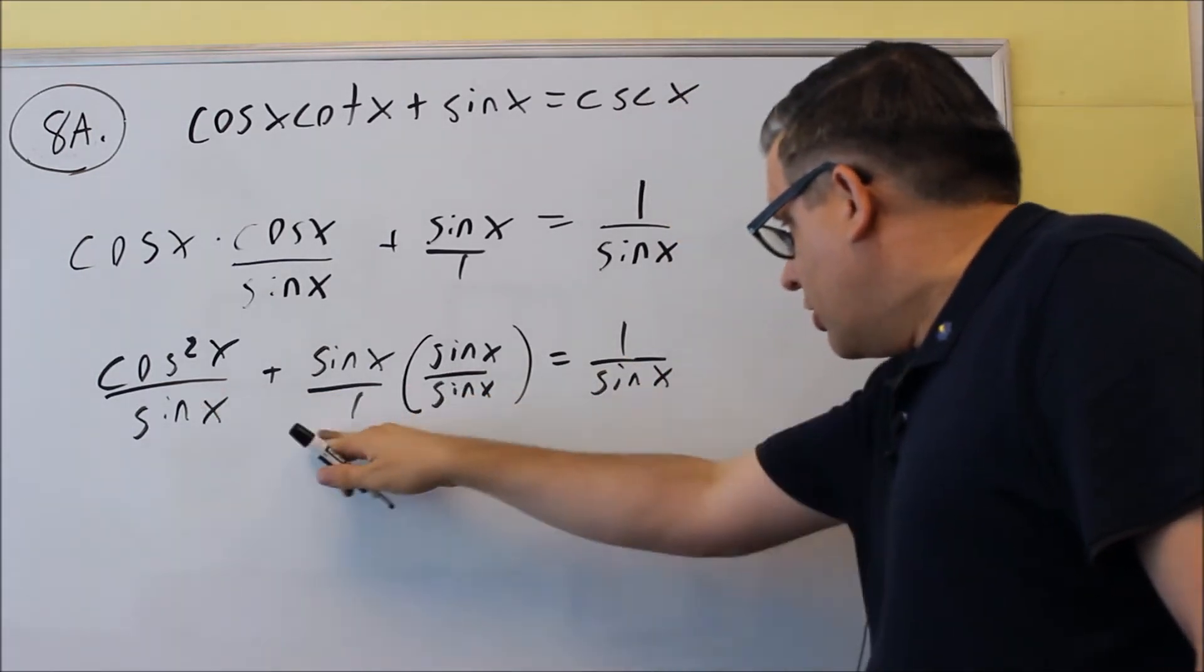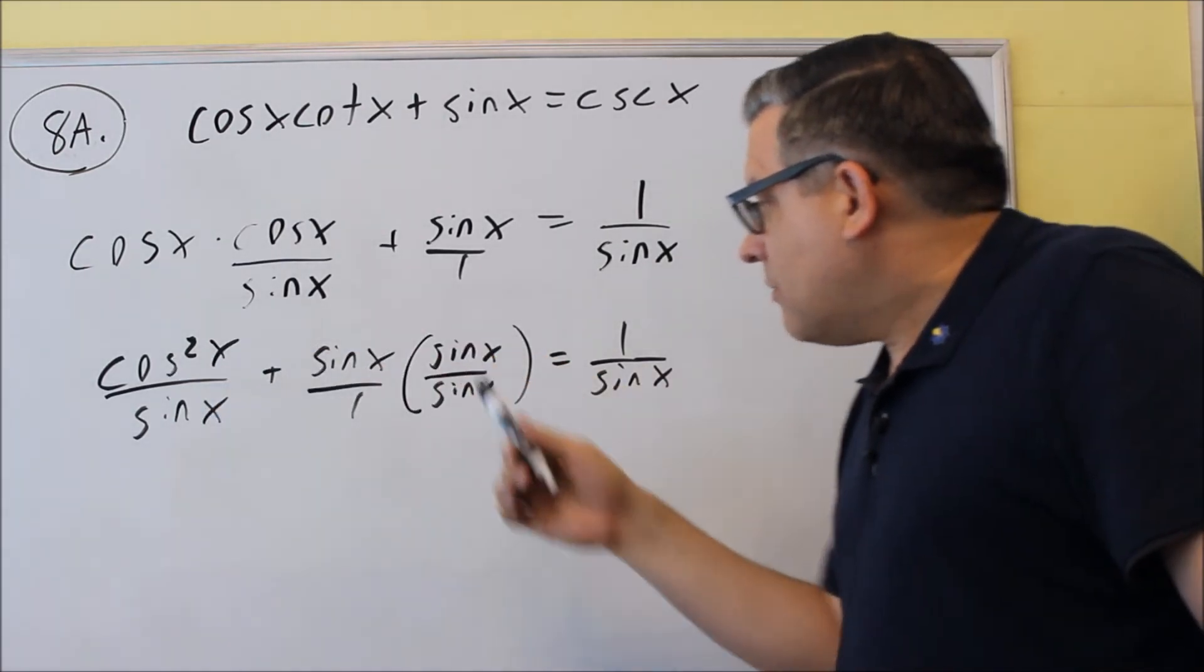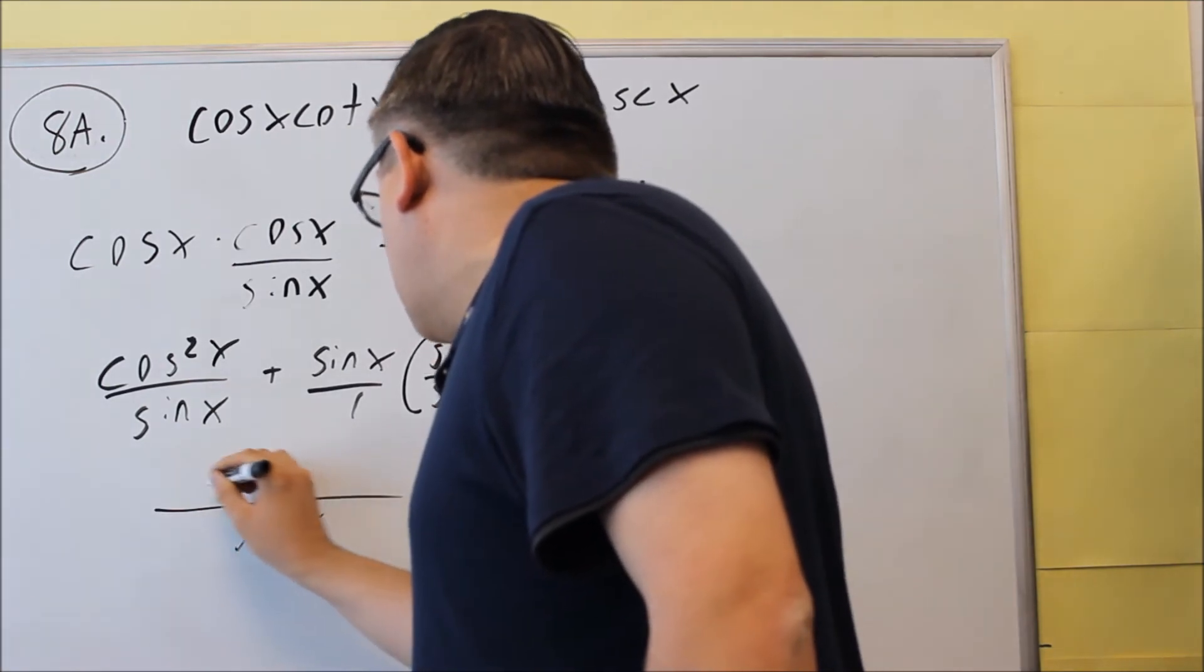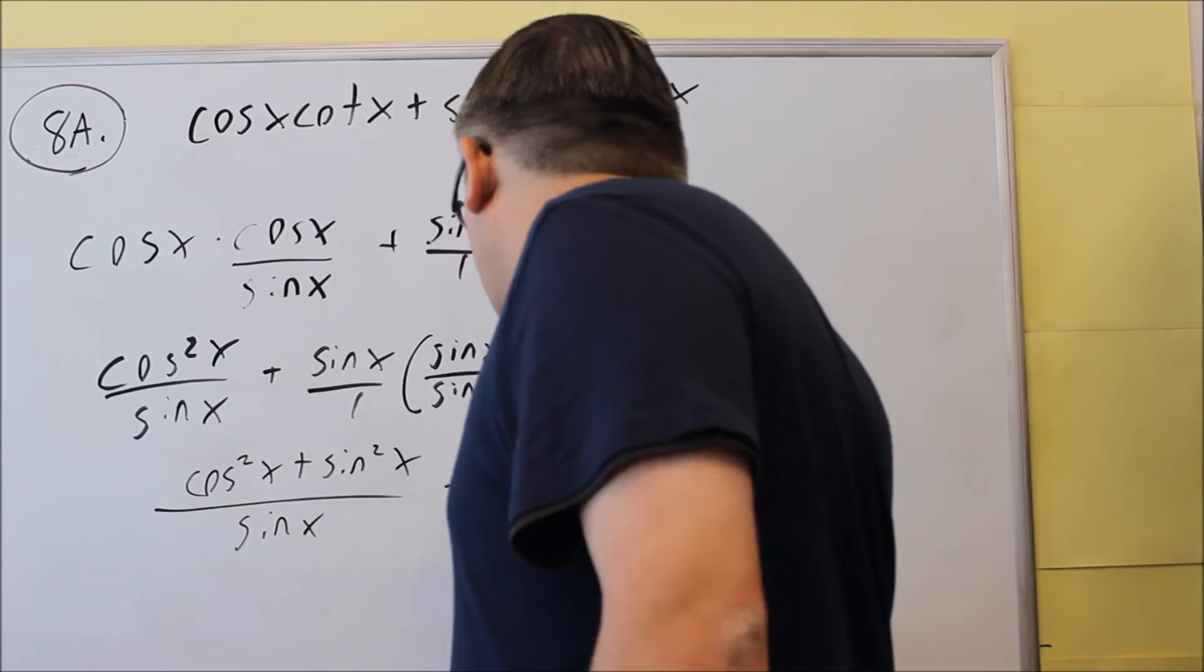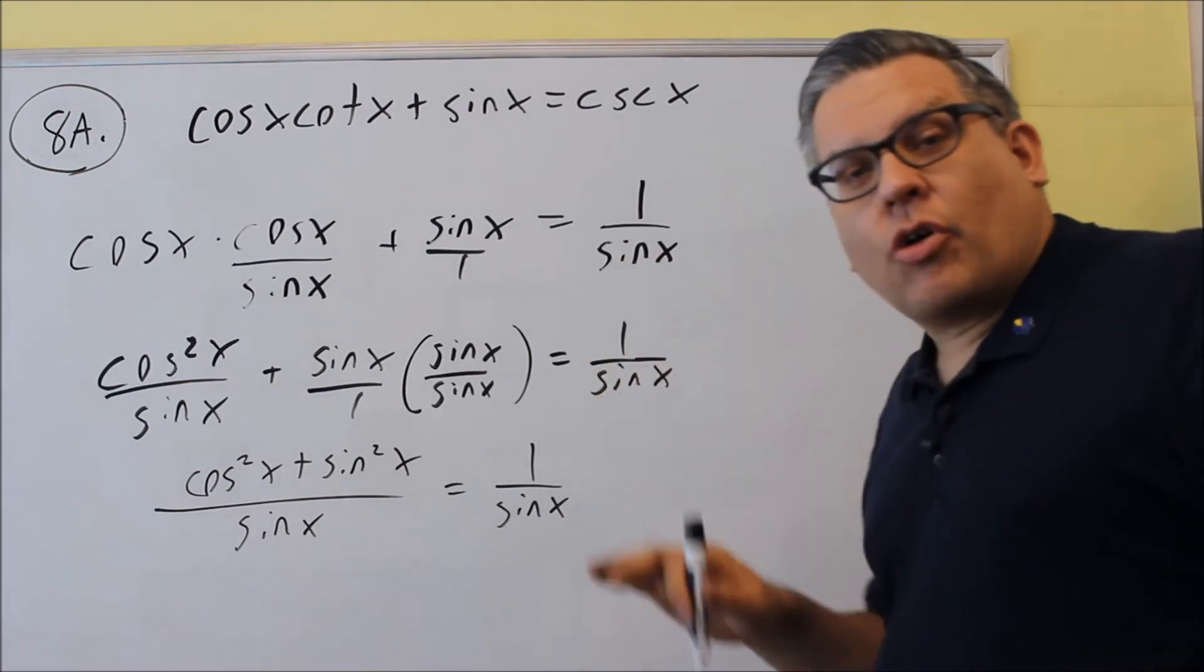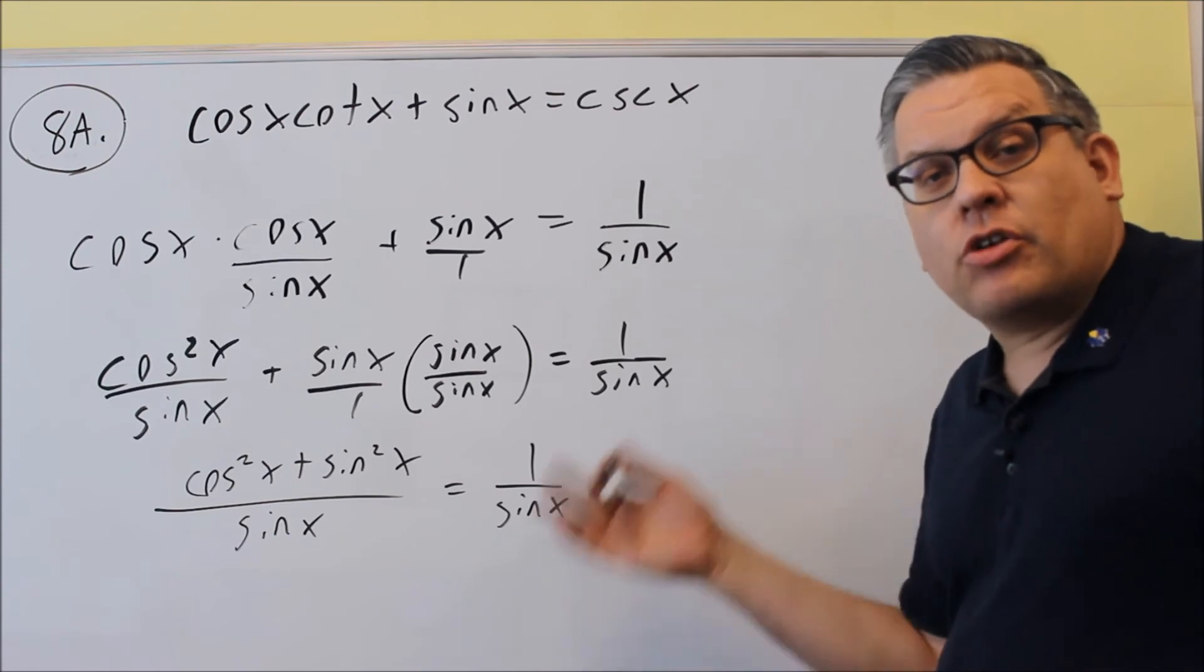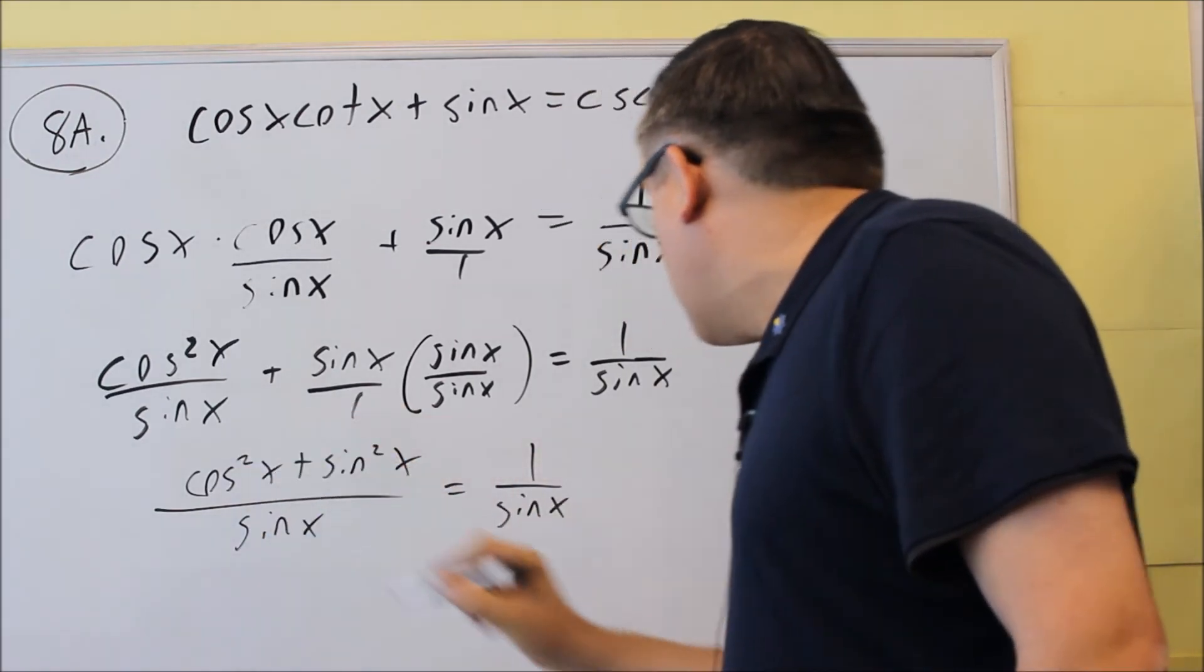This way, I'll get the denominators are going to match. Now on top, when I add the fractions together, I can put these over one denominator of sine x. On top, I get cosine squared x plus sine squared x. Okay, so I've combined them together. And as you go through, you should be looking for, there's a certain identity that pops up that you can put something in for. You want to look for that. And that's how we're actually going to finish this problem.